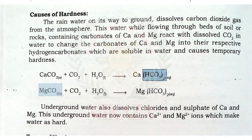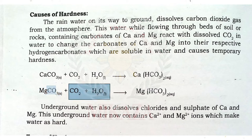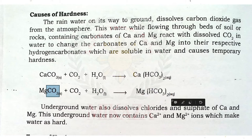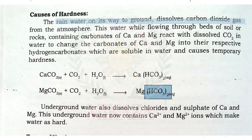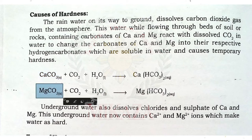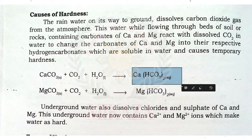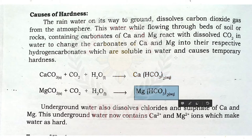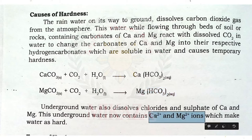Similarly, if the land contains magnesium carbonate, rainwater mixed with carbon dioxide reacts with magnesium carbonate to form magnesium hydrogen carbonate. The hardness of water is produced because carbon dioxide in the atmosphere reacts with calcium carbonate or magnesium carbonate, forming hydrogen carbonates which cause hardness. Underground water also dissolves chlorides and sulfates of calcium and magnesium, so underground water contains calcium and magnesium ions which make water hard.